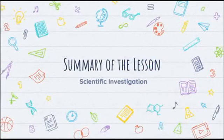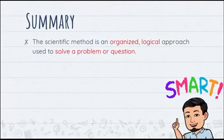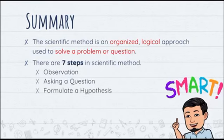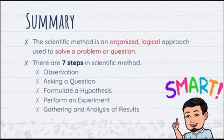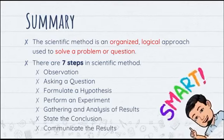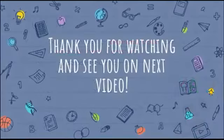And there you have it — the seven steps in the scientific method. Let us now summarize the lesson. The scientific method is an organized, logical approach used to solve a problem or a question. There are seven steps: observation, asking a question, formulating a hypothesis, performing an experiment, gathering and analysis of results, stating the conclusion, and communicating the results. I hope you learned something from this lecture video. Be sure to answer the activities in the module so you will be guided about the steps of the scientific method. Thank you for watching and see you in the next lecture video.